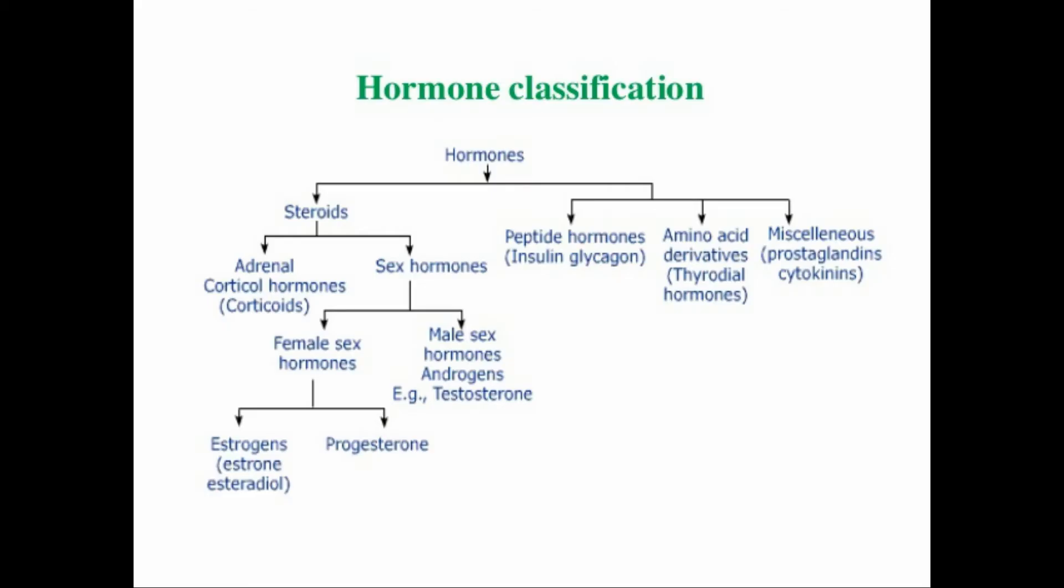Hormones are classified according to their chemical nature into steroid hormones and protein hormones. Steroid hormones are made of fatty acids such as adrenocortical hormones and sex hormones. Protein hormones are made of amino acids such as insulin, thyroid, prostaglandin and secretin hormones.